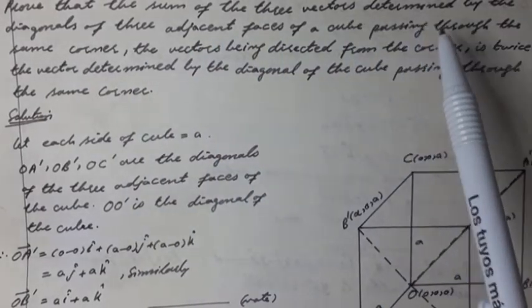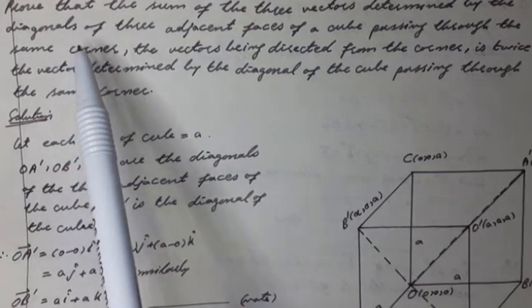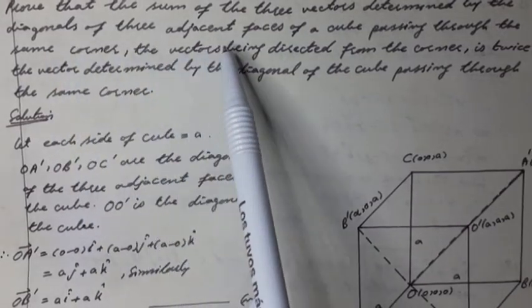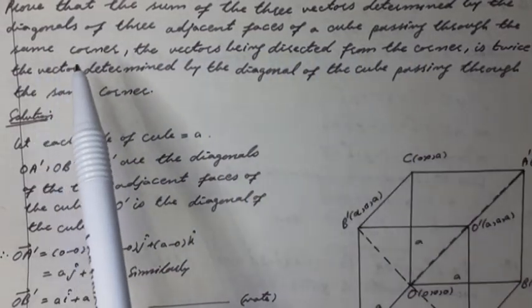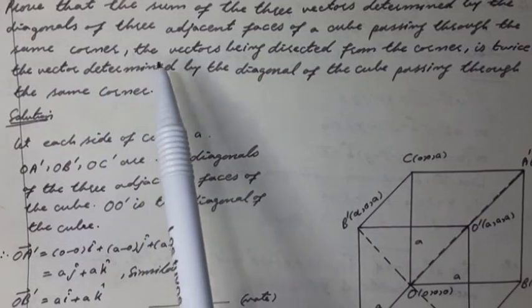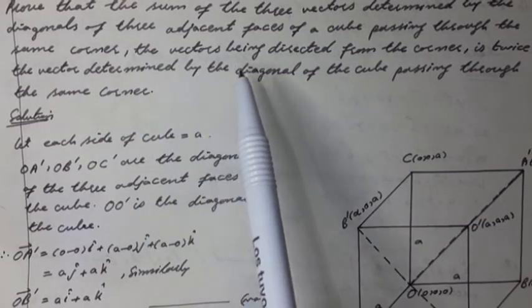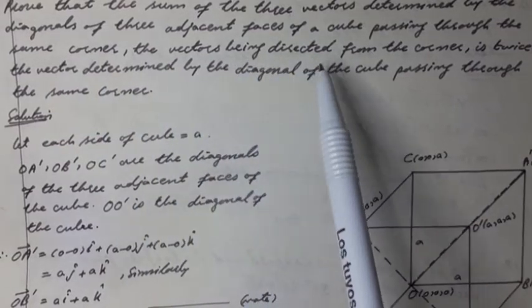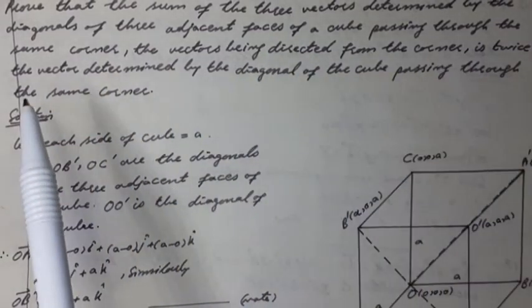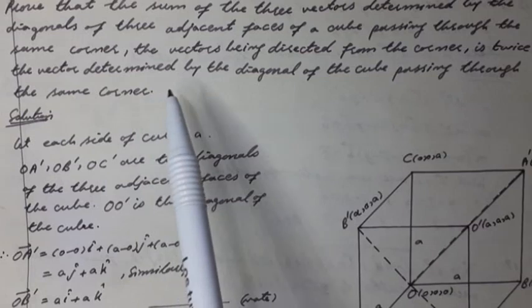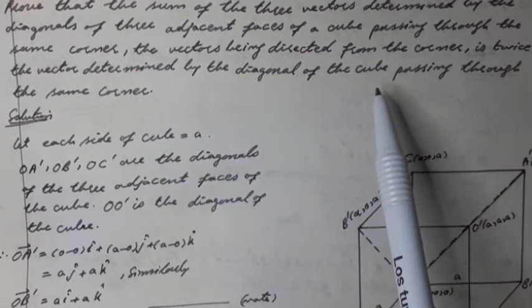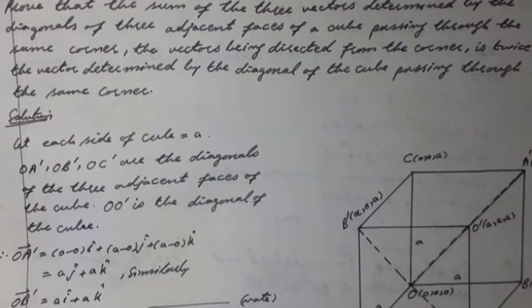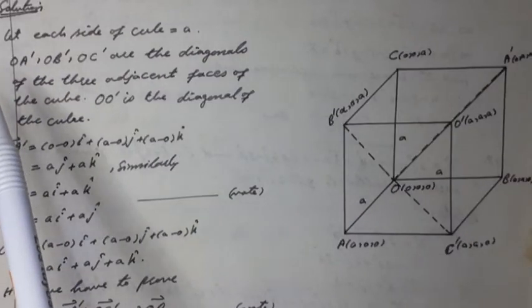Prove that the sum of the three vectors determined by the diagonals of the three adjacent faces of a cube, passing through the same corner, the vectors being directed from the corner, is twice the vector determined by the diagonal of the cube passing through the same corner. Solution.